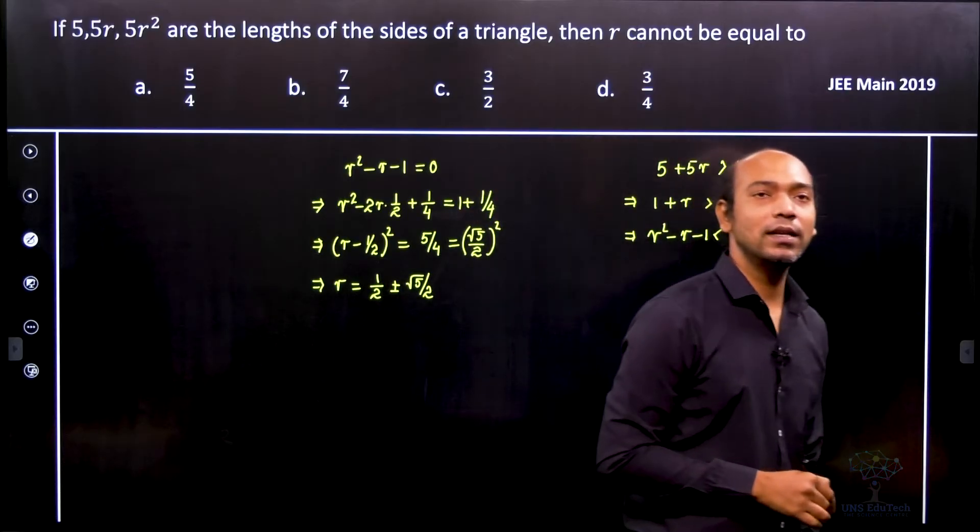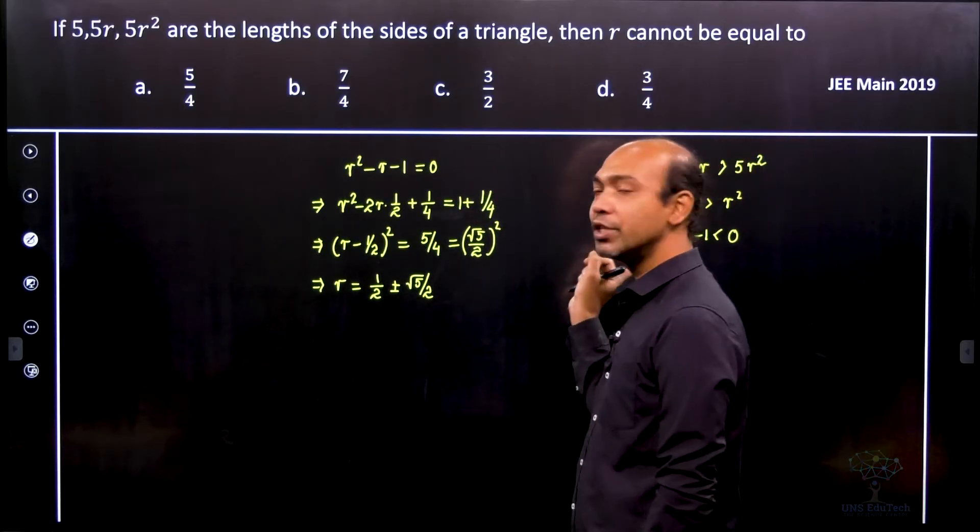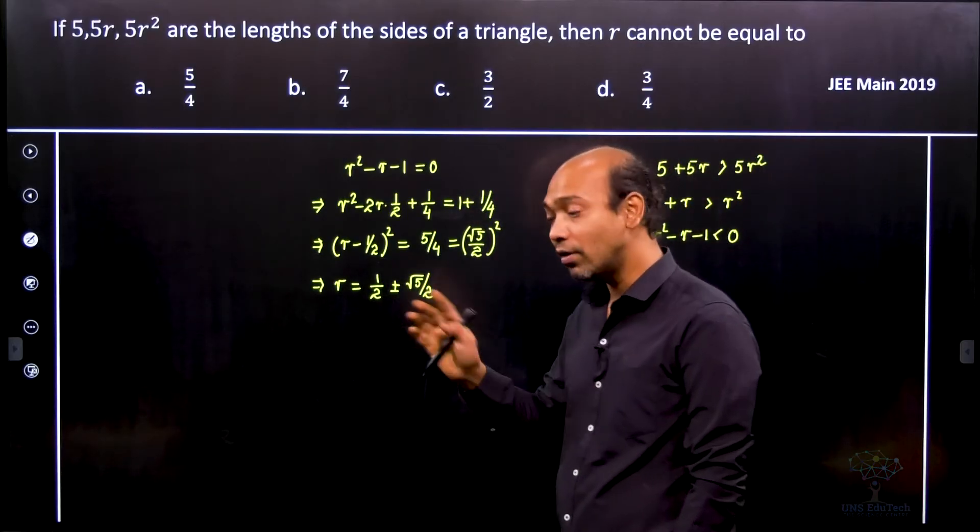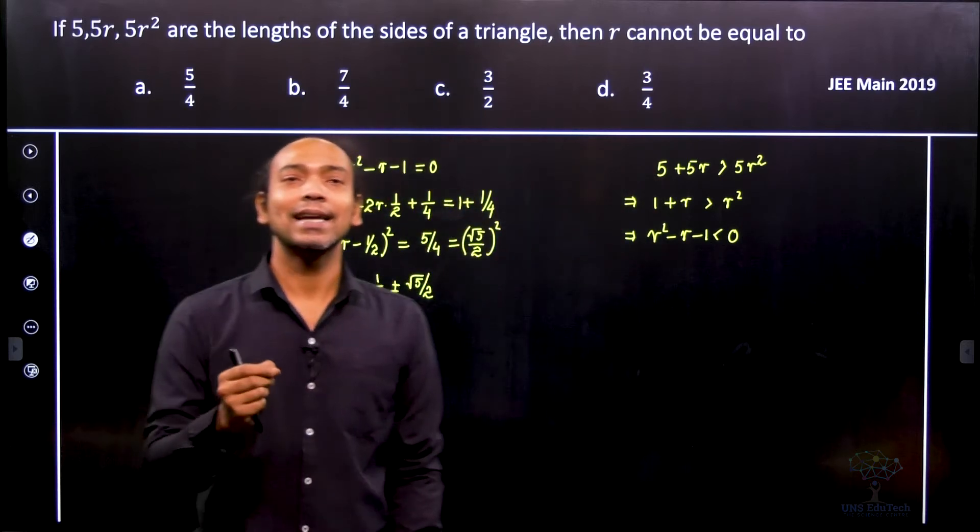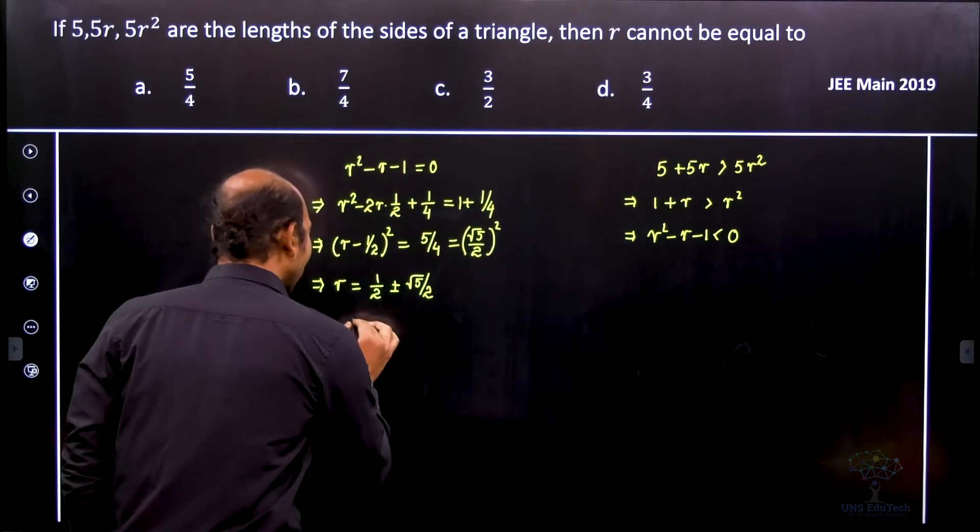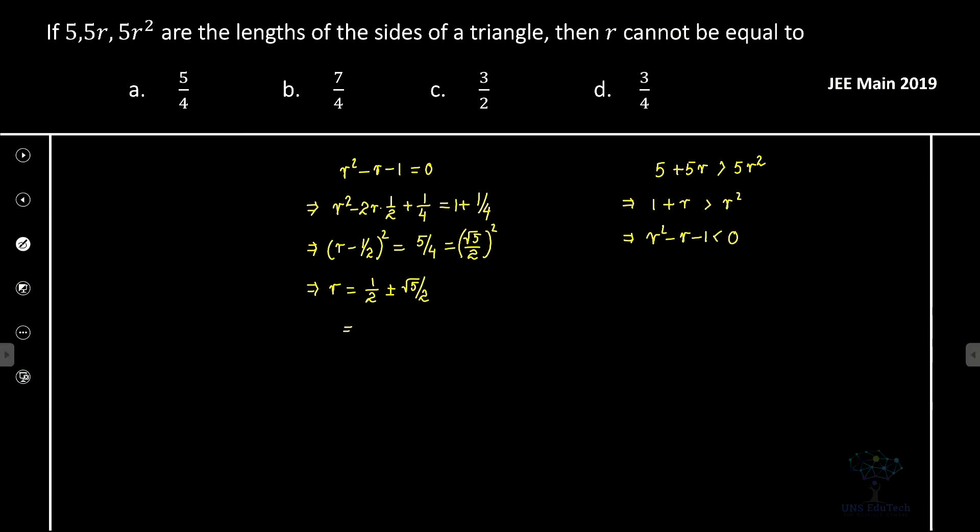So that's actually the solution of the values of r so that this equation will be 0, not less than 0. So let's calculate these values. If you calculate, we'll find that this gives you -0.62 and 1.62. So these are the numerical values.